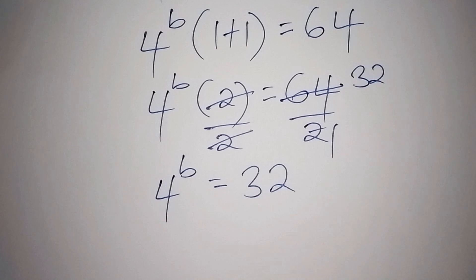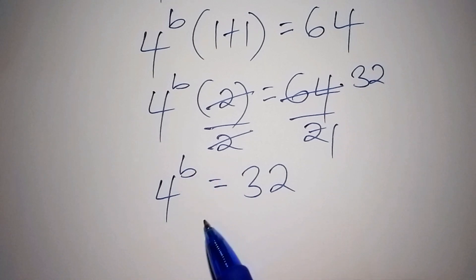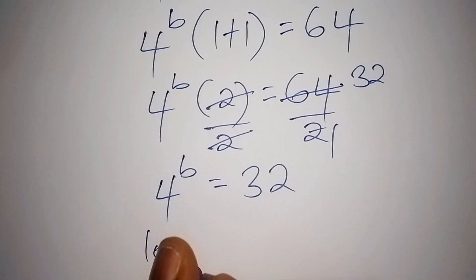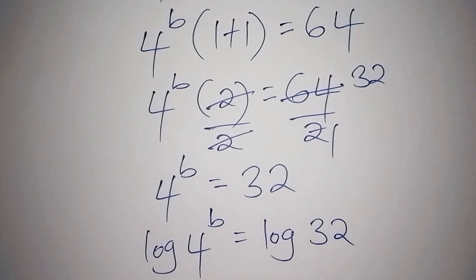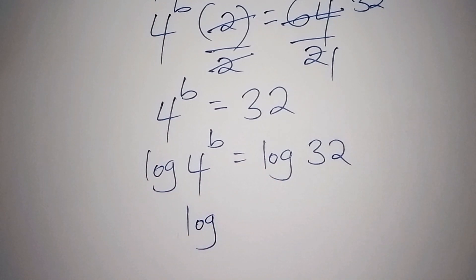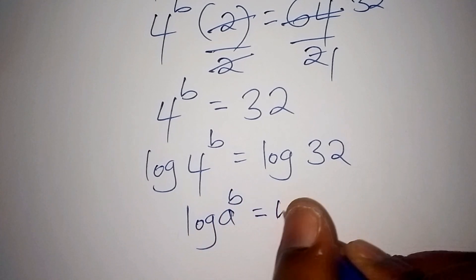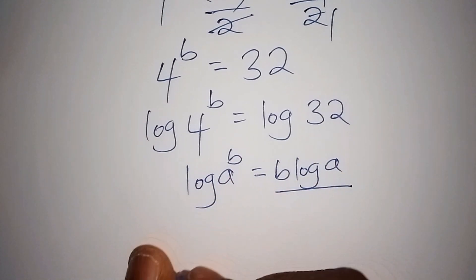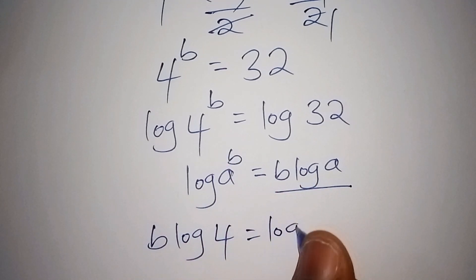At this stage, 32 is a whole number, 4 is the base, and b is the index. It is difficult for us to express 32 to the base of 4 directly, so we shall introduce log on both sides, giving us log of 4 to the power of b is equals to log of 32. By the law of indices, log of a to the power of b can be written as b times log of a.